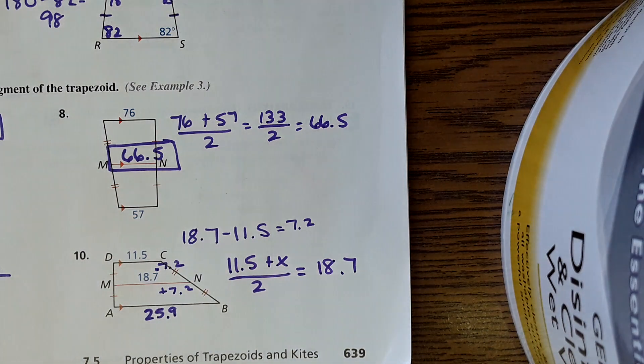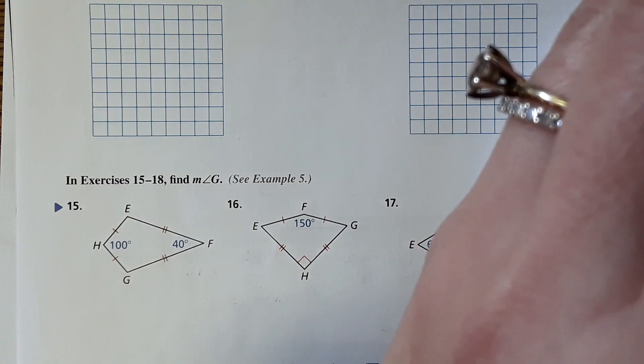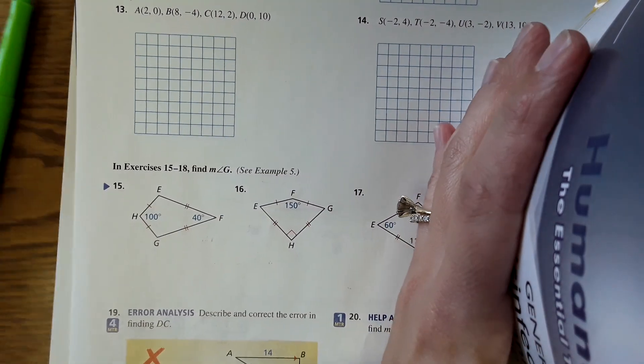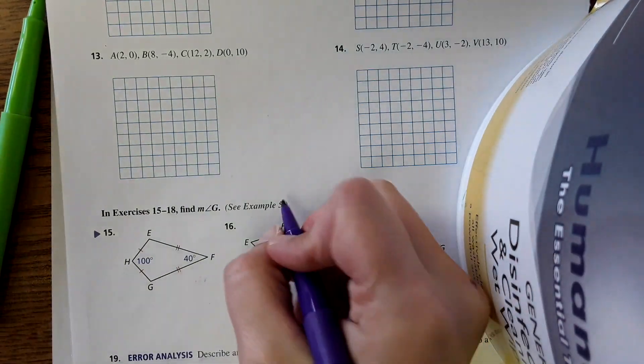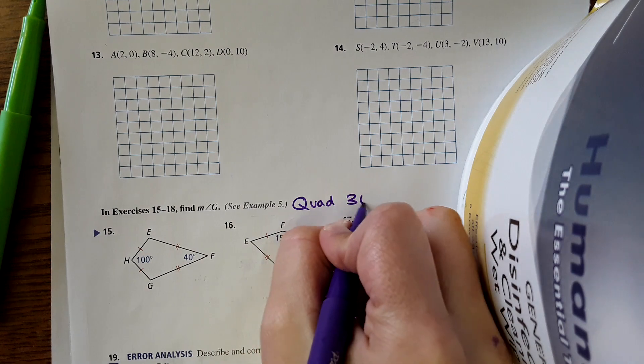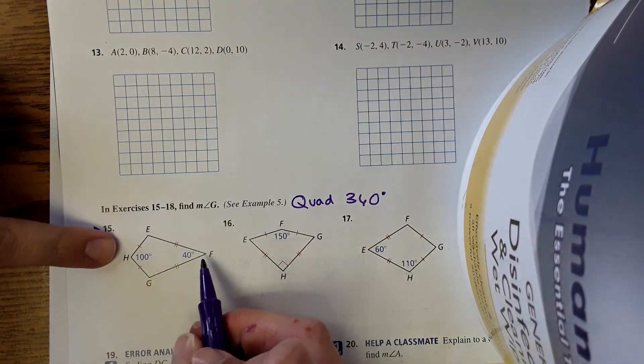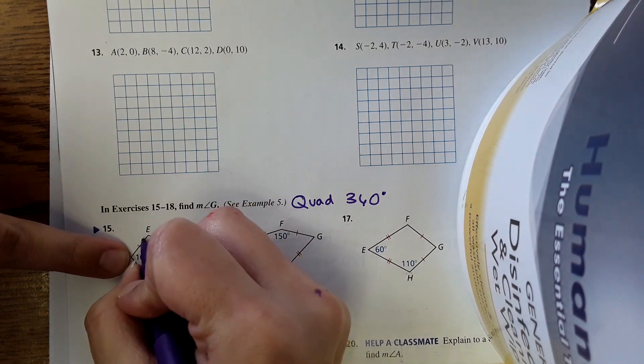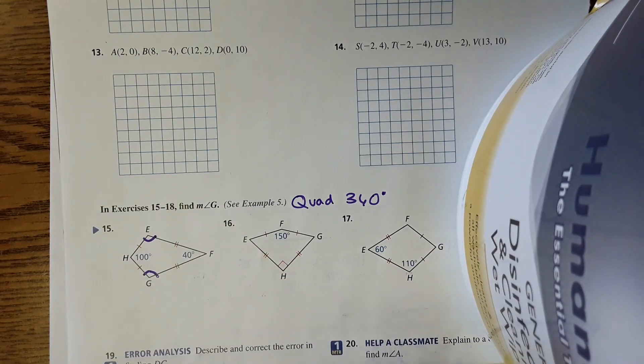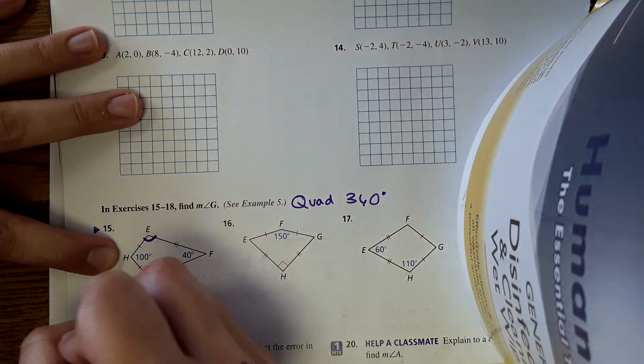Okay, we're gonna do a couple on the back, so flip it over. Okay, on the back it's kites. For a quadrilateral, remember the interior angles add up to 360 degrees, so we're going to use that fact for these. Here's a kite. As we know, this angle is equal to this one, so we're going to subtract these two numbers from 360.